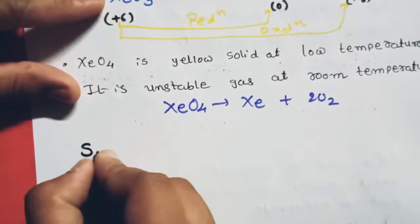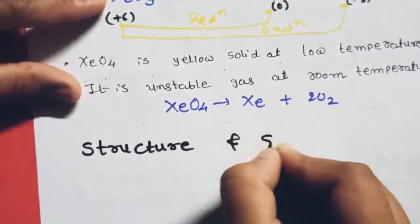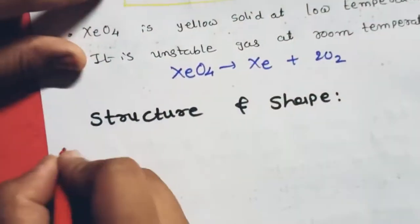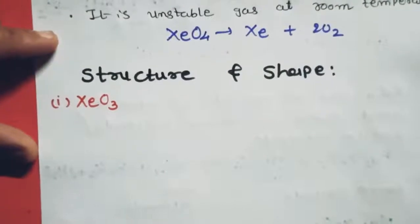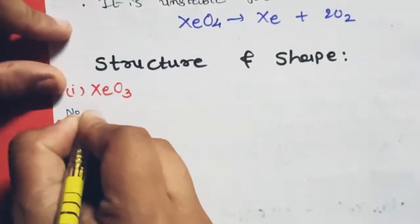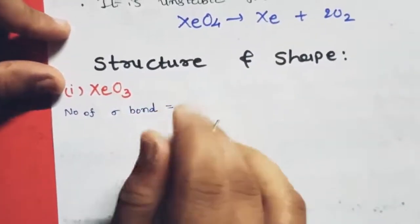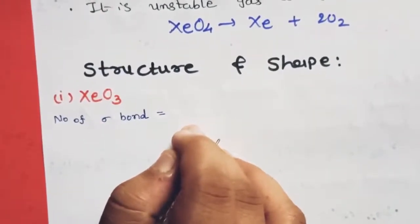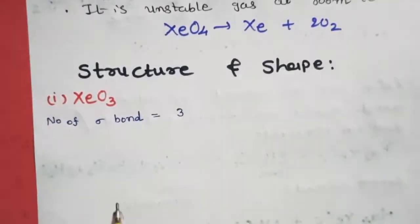Now let's see the structure and shape of xenon oxides. Starting with xenon trioxide XeO₃.